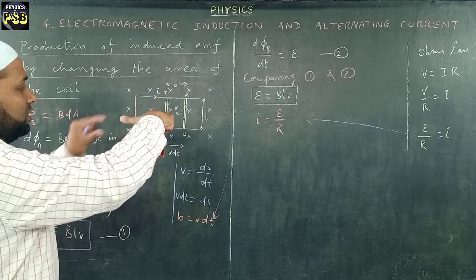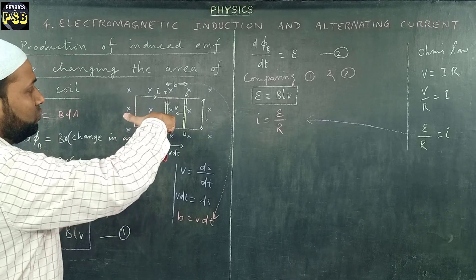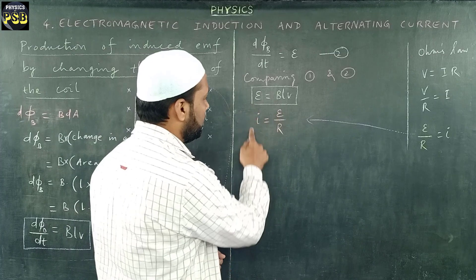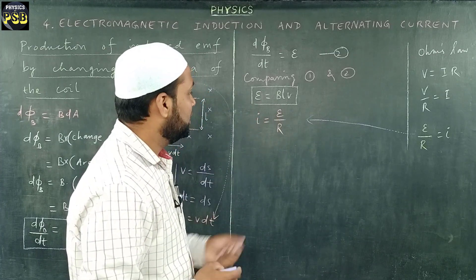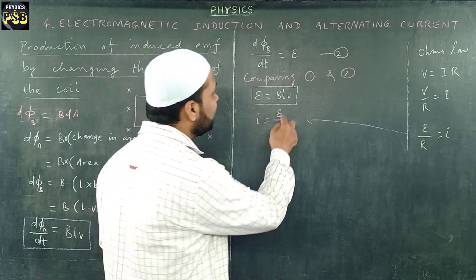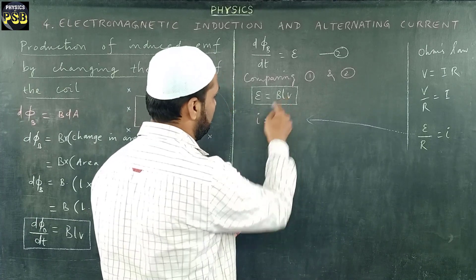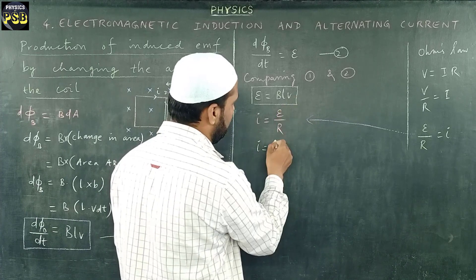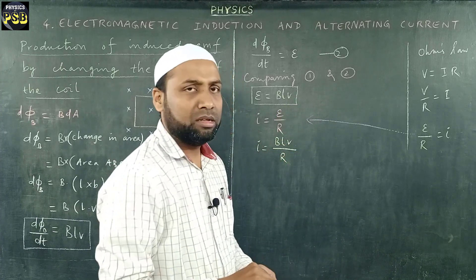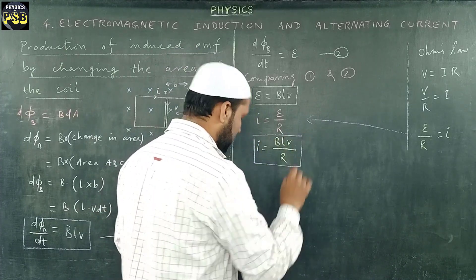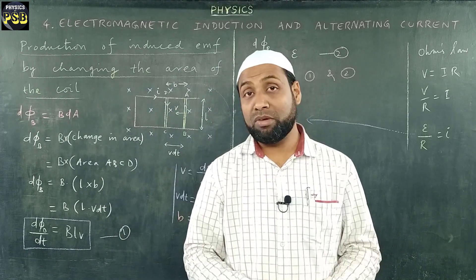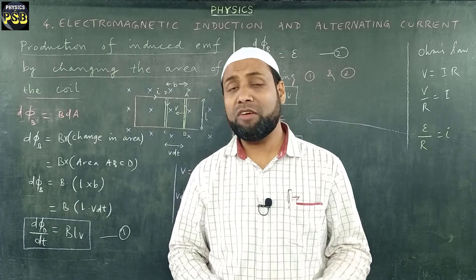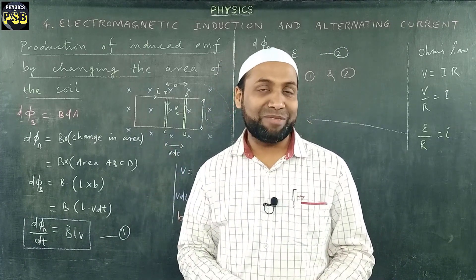The field acts inward and the rod moves towards the left, so the current moves in the downward direction in the metallic conductor. This expression gives us the induced current in the loop. Substituting the value of ε, we get I = B·L·V/R. This is the final expression which gives us the value of induced current in this loop placed in the magnetic field. I hope the video is useful — if you have any doubt, please put a question in the comment section. Thanks for watching.